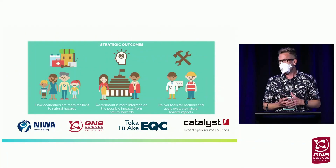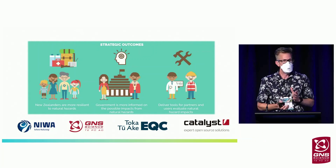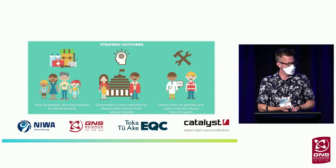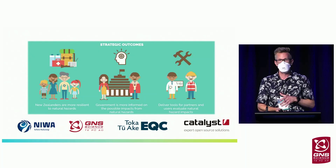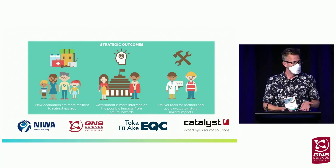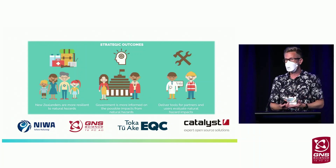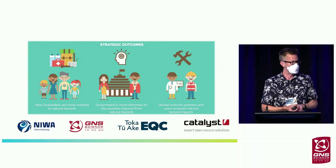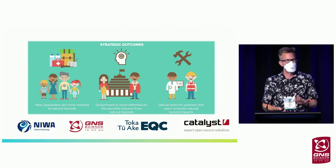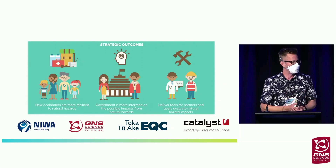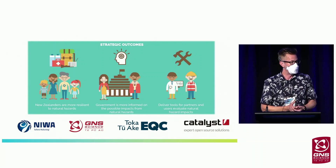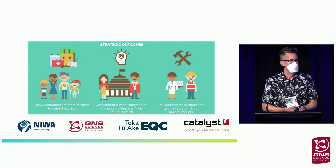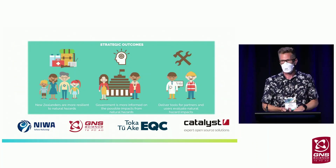The RiskScape project has four key partners. GNS and NIWA started the project around 10 years ago. Recently, Toka Tū Ake EQC have come on board as a partner, and the software was developed through Catalyst IT, an open-source software firm based in Wellington. The key strategic outcomes for the RiskScape project is to ensure that New Zealanders are more resilient to natural hazards by making risk information readily accessible so people can undertake risk assessments and make informed disaster risk management decisions.